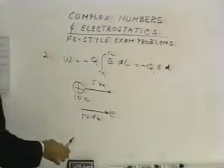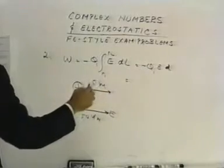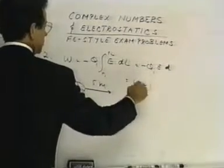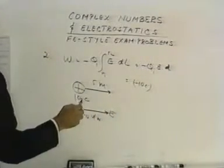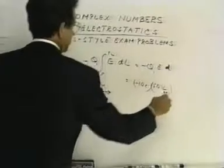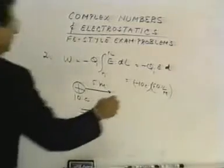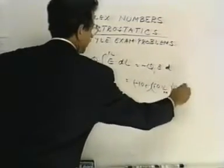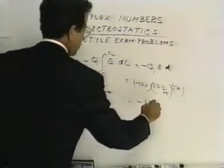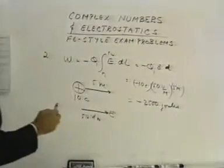It's a fairly simple linear problem. So this now becomes equal to, well, Q1 has a charge of minus 10 coulombs. The E field is 50 volts per meter, and the distance is equal to 5 meters. So when we multiply these together, we get minus 2,500 joules.